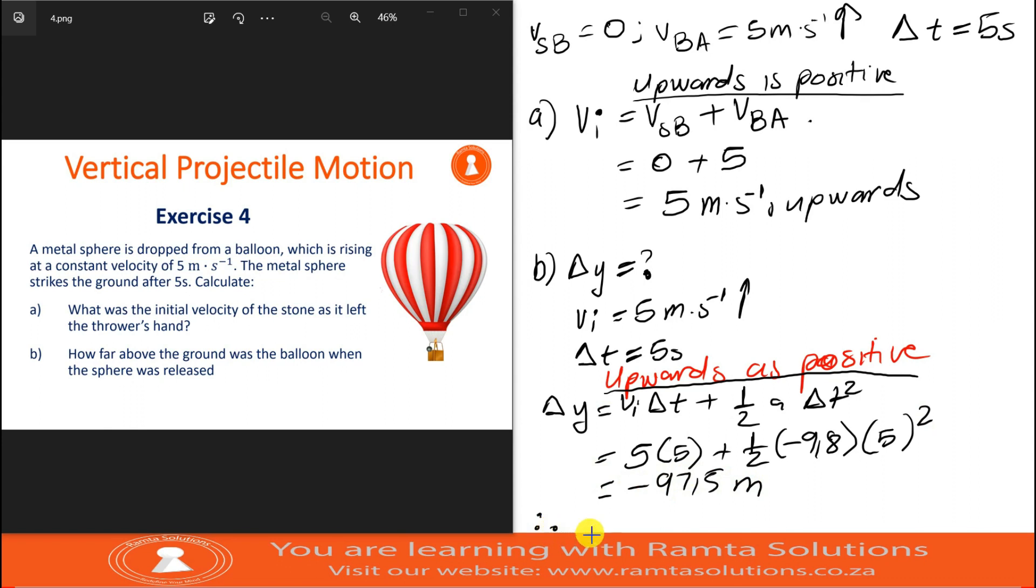So our answer is negative 97.5 meters. Therefore, the balloon was 97.5 meters above the ground. The reason we got a negative here is because, remember, the object went upwards first. So this negative implies that the displacement is basically downwards. We can therefore say the balloon was 97.5 meters above the ground.